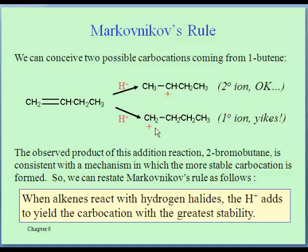Primary carbocations don't like to form, and so in the second step when the bromide comes in — or if it's HCl, chloride — we expect it to be at the number two position and form a product based on this first intermediate, because we've made the more stable carbocation. We don't get much of the one-bromo or one-chloro product because that would involve the less stable carbocation forming. This rule at the bottom is a more modern way of stating Markovnikov's rule, but as long as you can apply the rule you can predict the major product.